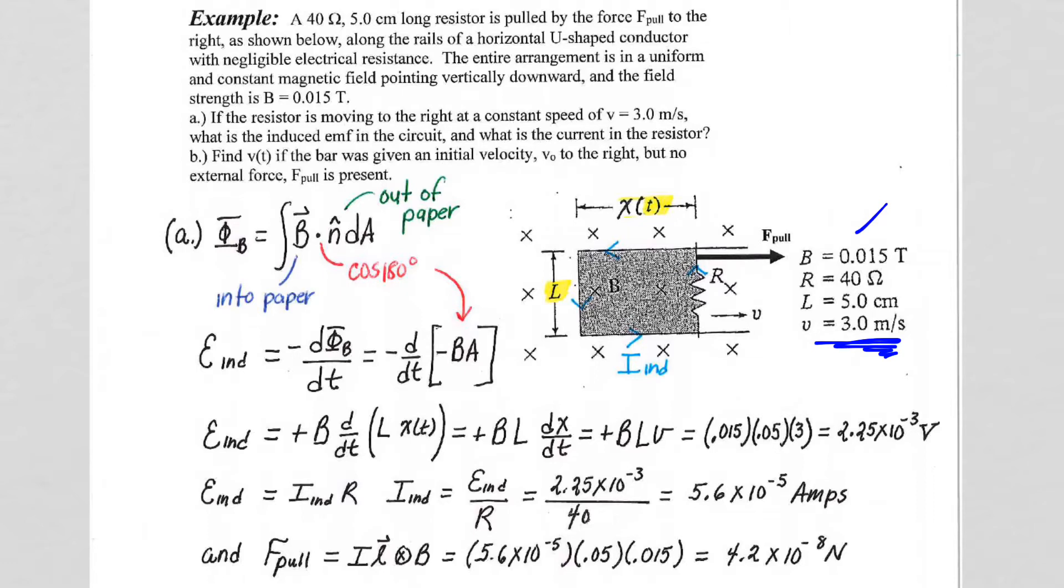So we want the resistor, we want the bar to move at a constant speed of 3 meters per second. Well, the beginning part of the analysis is the same. The bar is moving to the right. The flux is increasing into the paper. As the bar goes to the right, nature wants to fight that increase, generates the counterclockwise current that we just talked about on our last page of notes.